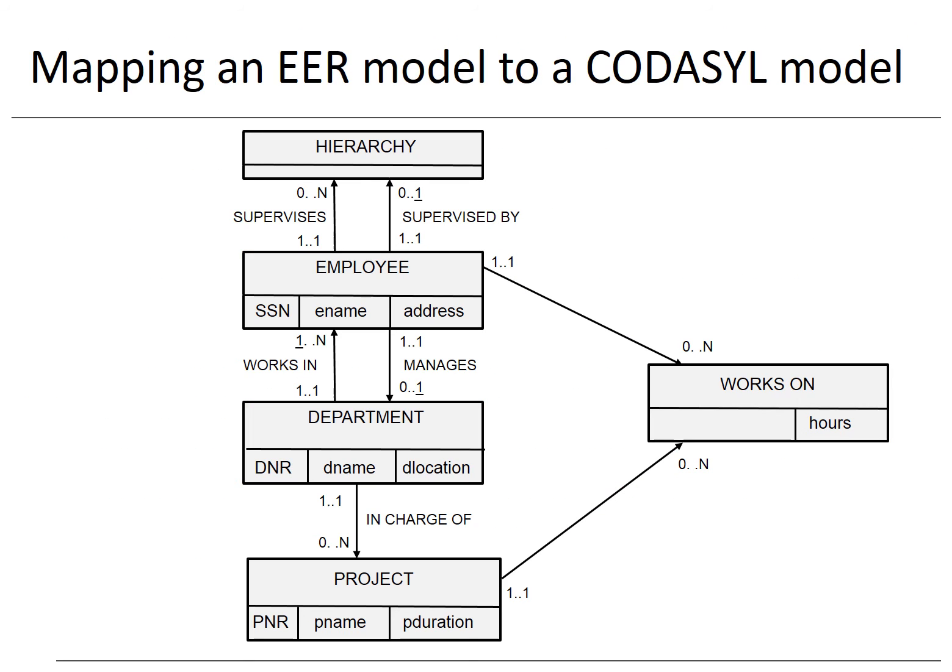Here you can see the logical codicil model corresponding to our ER model for the HR database. The underlying cardinalities are the ones that correspond to the ER model but cannot be enforced in the codicil model. As an example, we cannot enforce that a department should have at least one employee or that an employee can have at most one manager. These model shortcomings should be documented and followed up during application development.